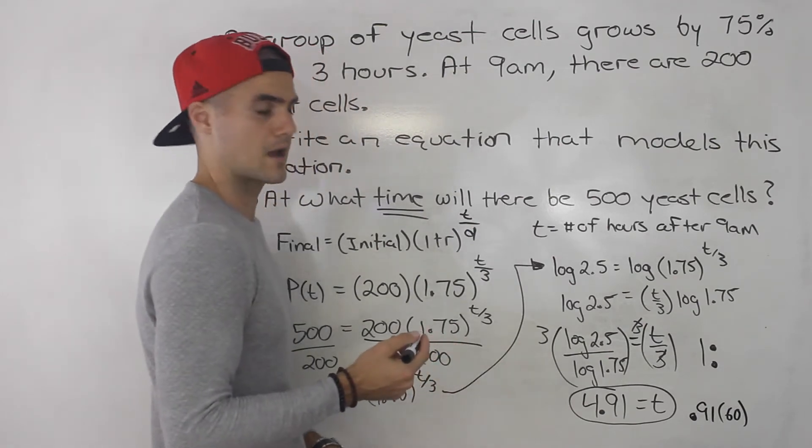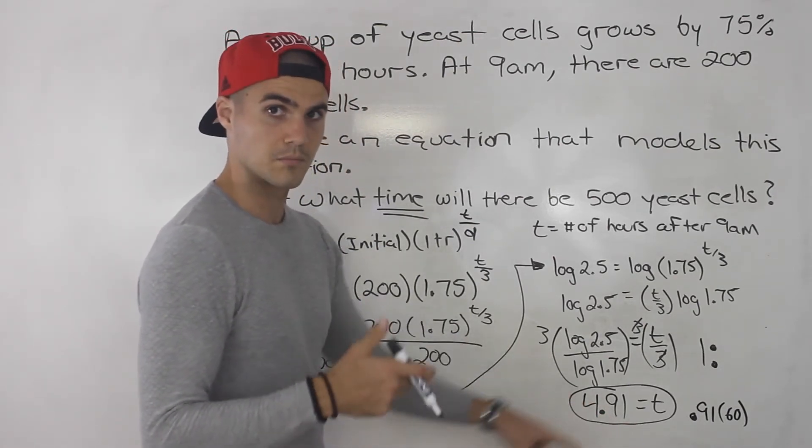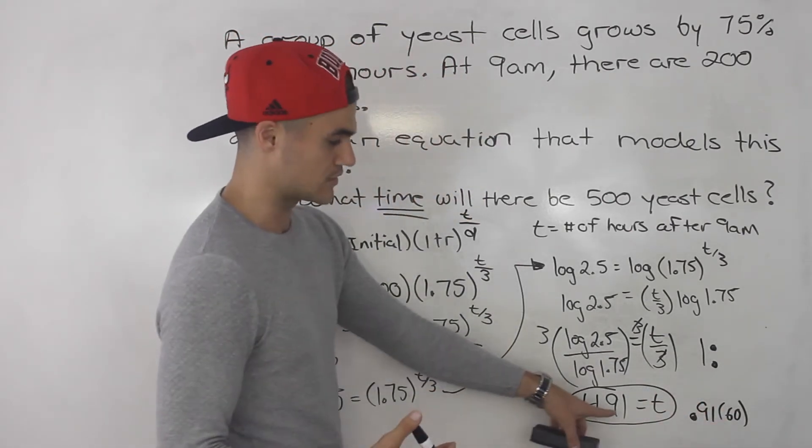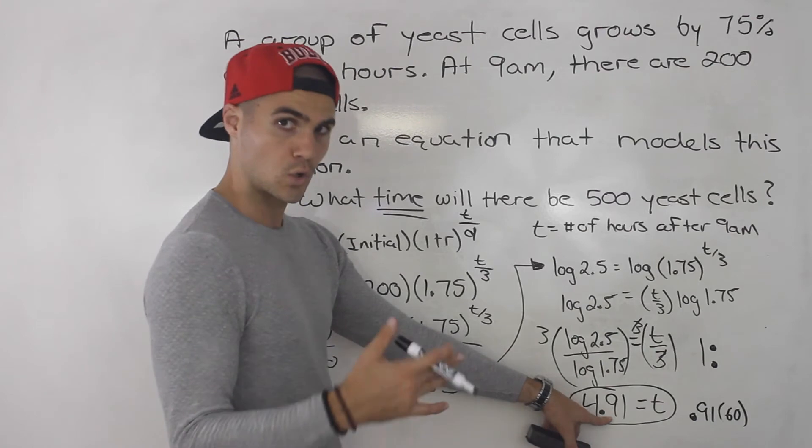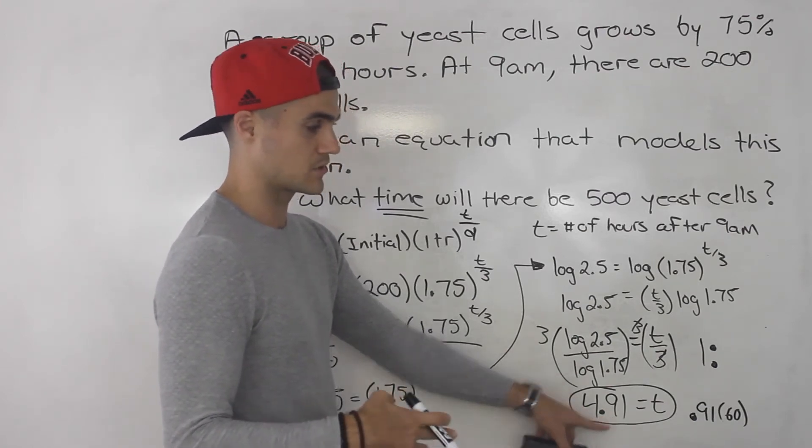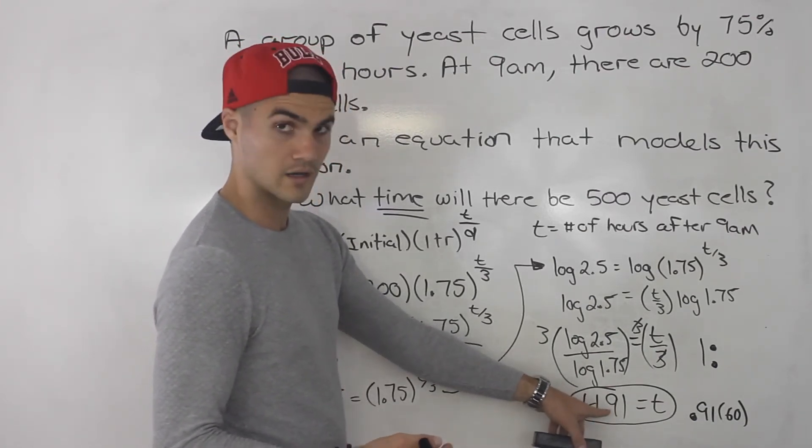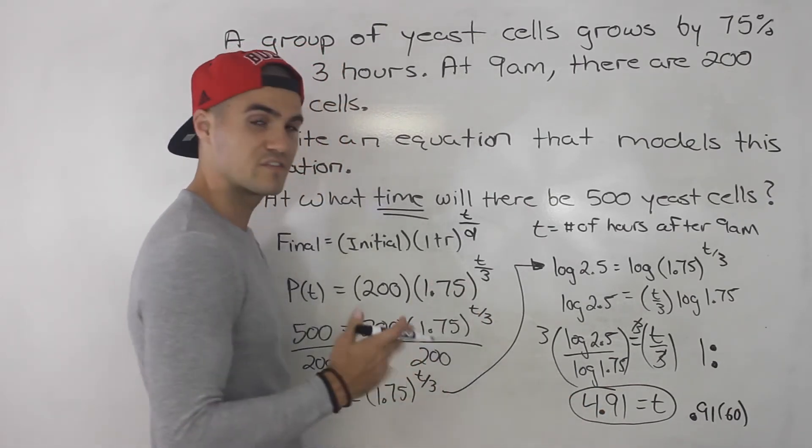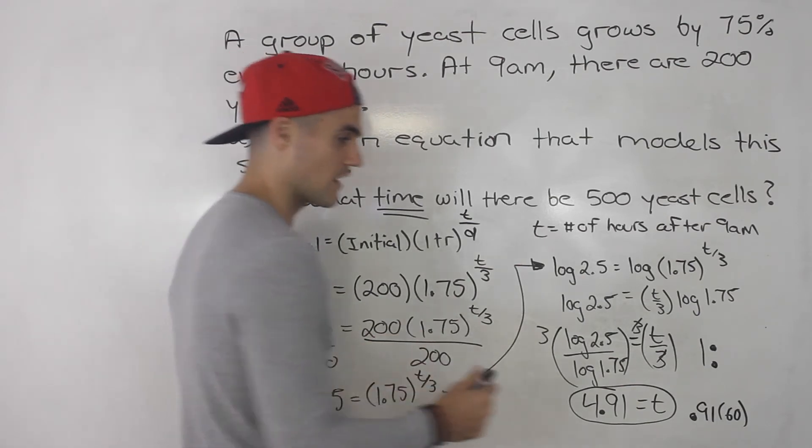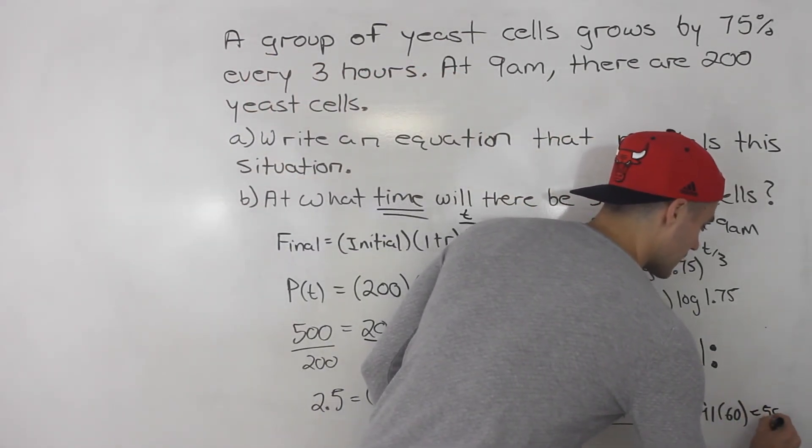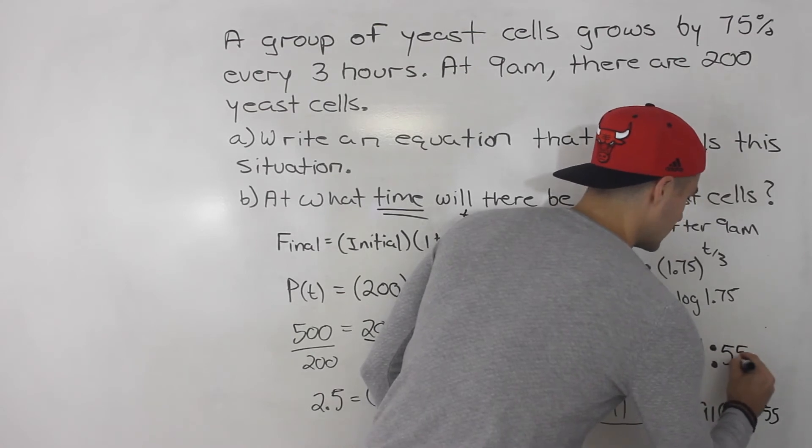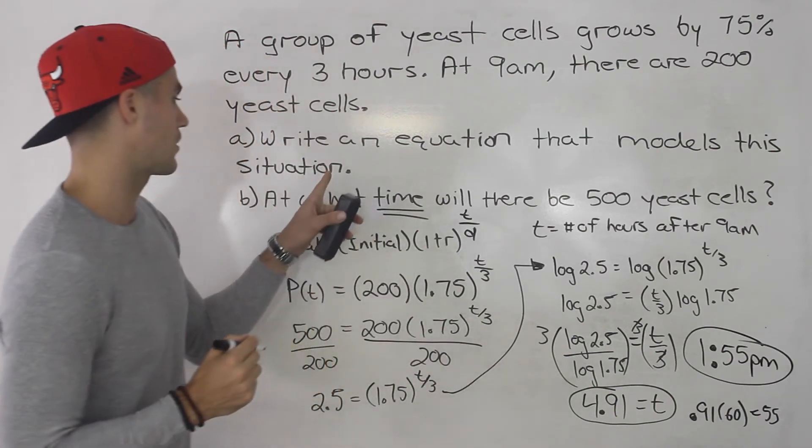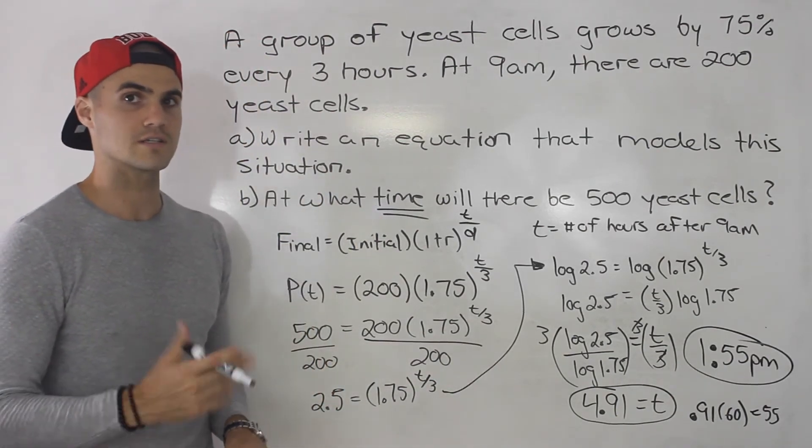If you had 0.5 here, half an hour is 30 minutes, so 0.5 times 60 gives you 30 minutes. If this was 0.25, a quarter hour, 0.25 times 60 gives you 15 minutes. For 0.91 of an hour, 91 percent of an hour, 0.91 times 60 gives you about 54, 55 minutes. Let's call it 55. So basically at 1:55 p.m., that is the answer to part b. That's when there will be 500 yeast cells.